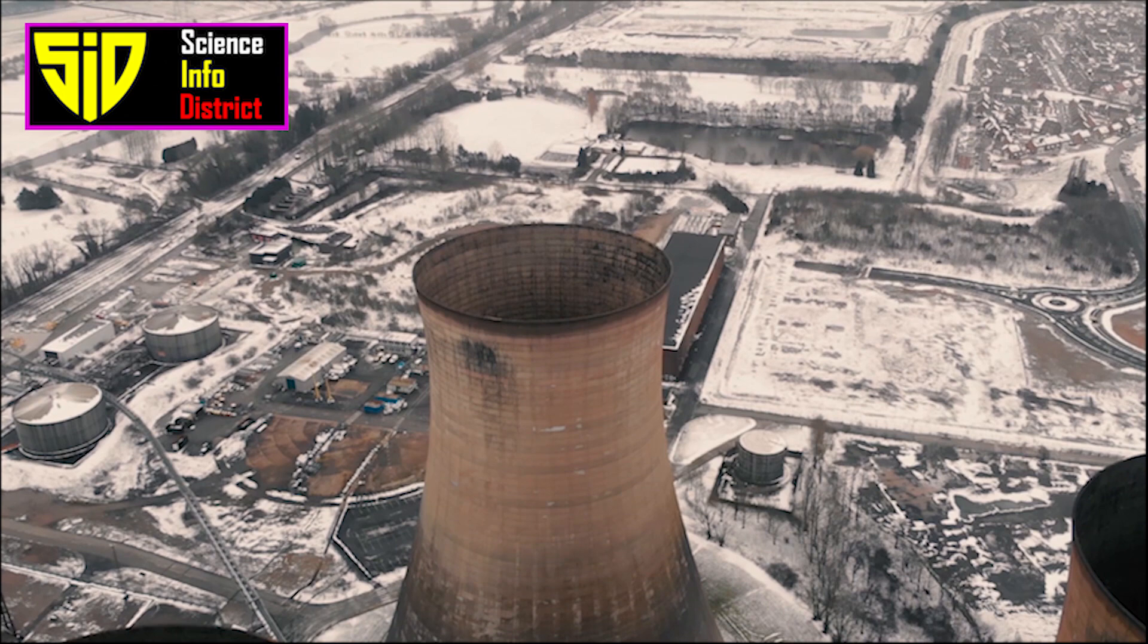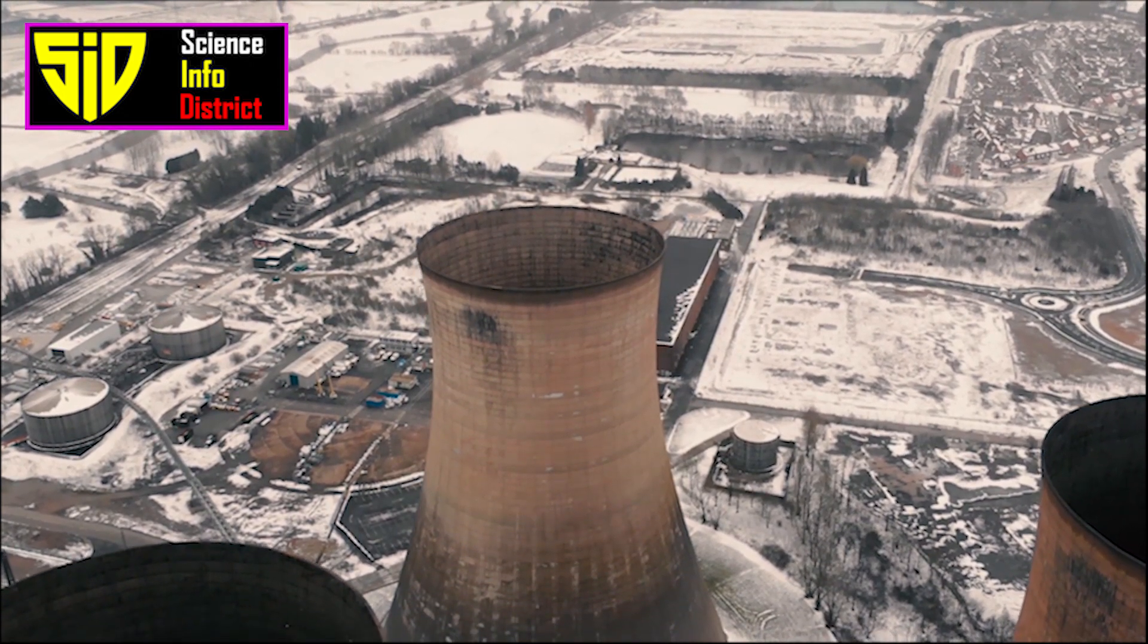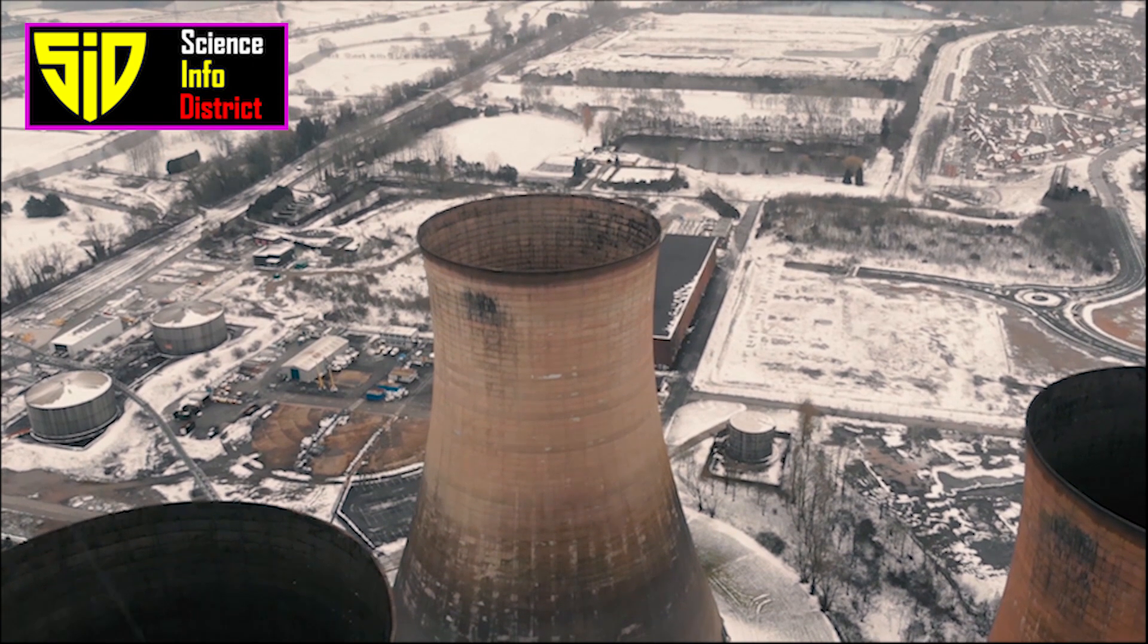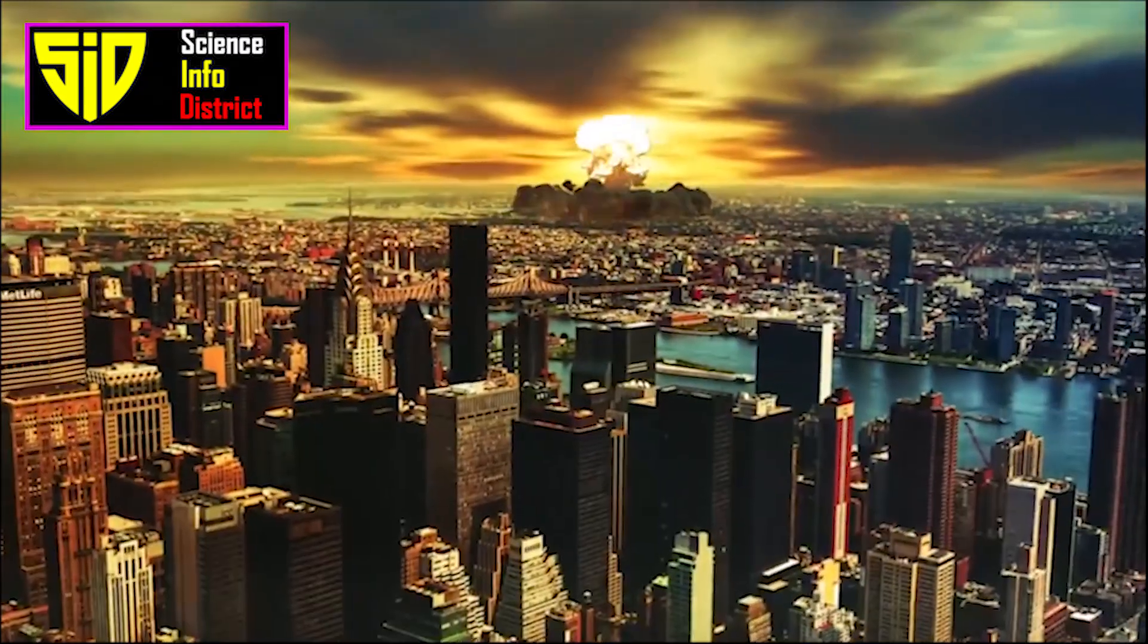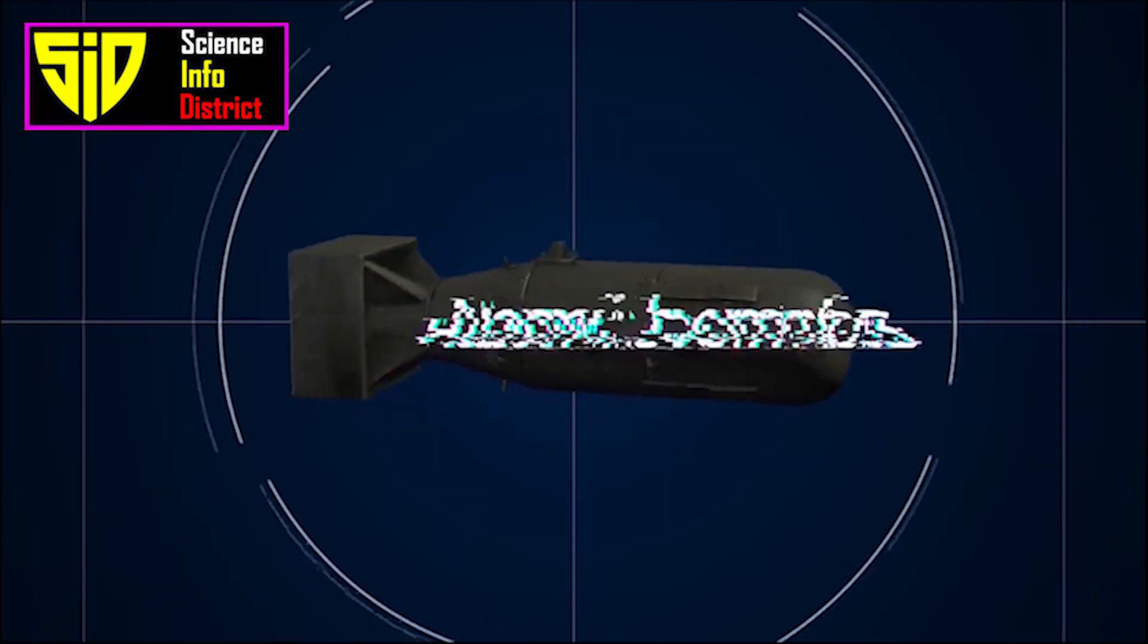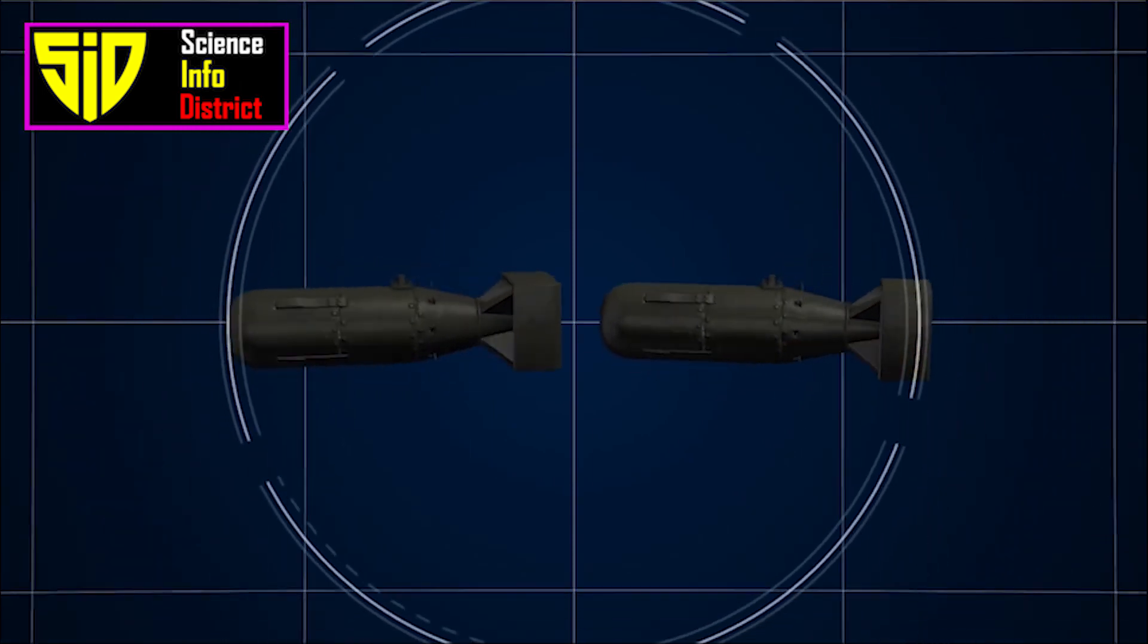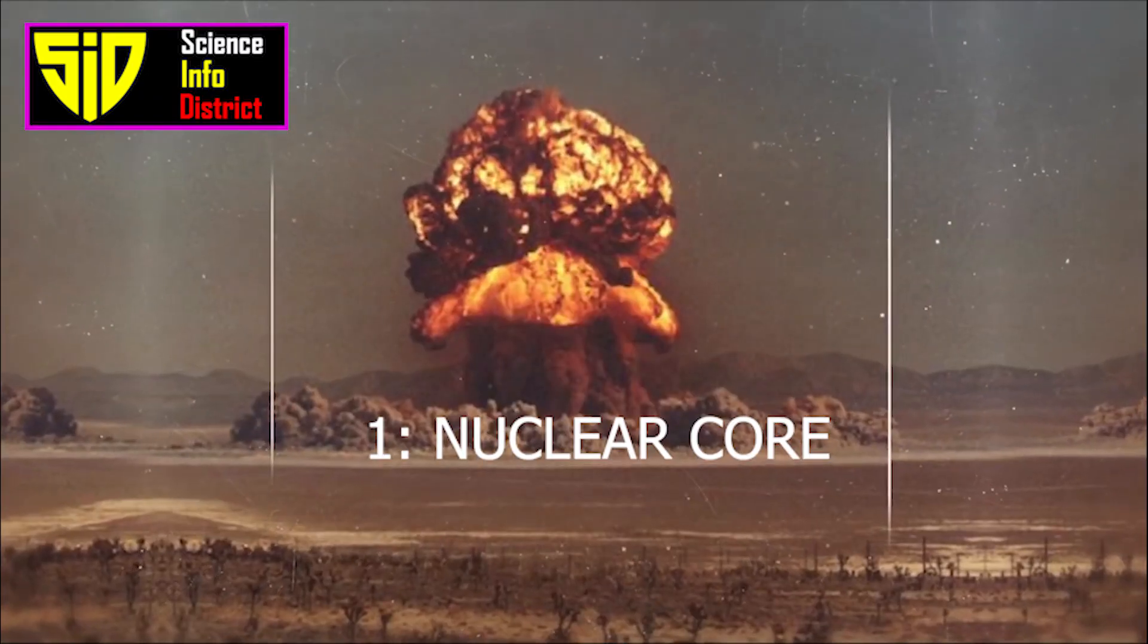A nuclear bomb, also known as an atomic bomb, is a weapon that uses nuclear fission to release a large amount of energy in the form of an explosion. The basic design of a nuclear bomb consists of several key components, including a nuclear core, conventional explosives, and a trigger mechanism.